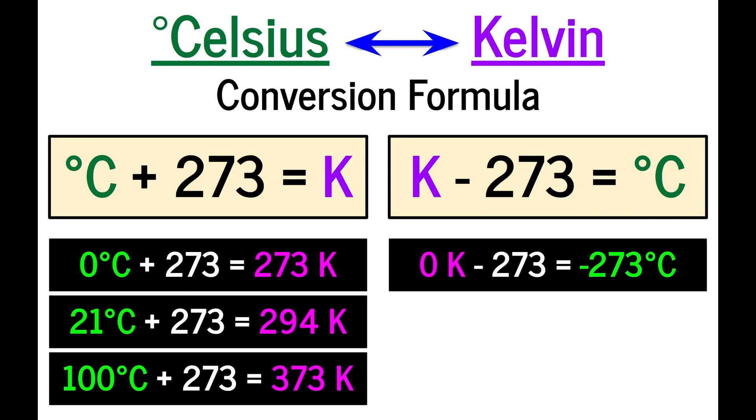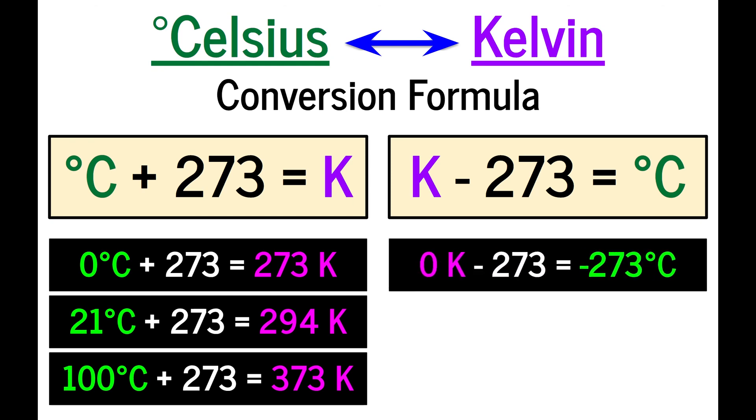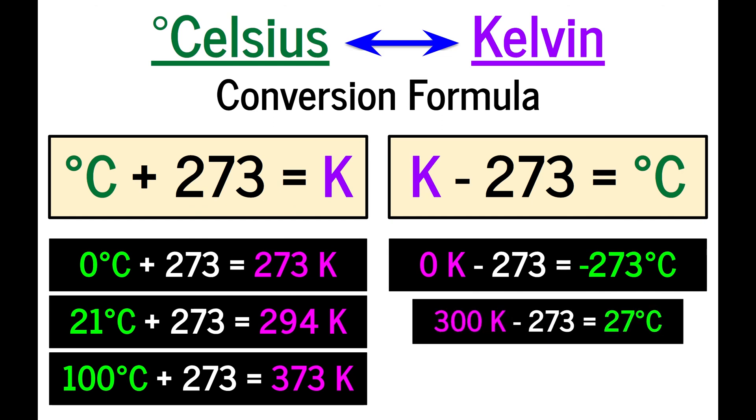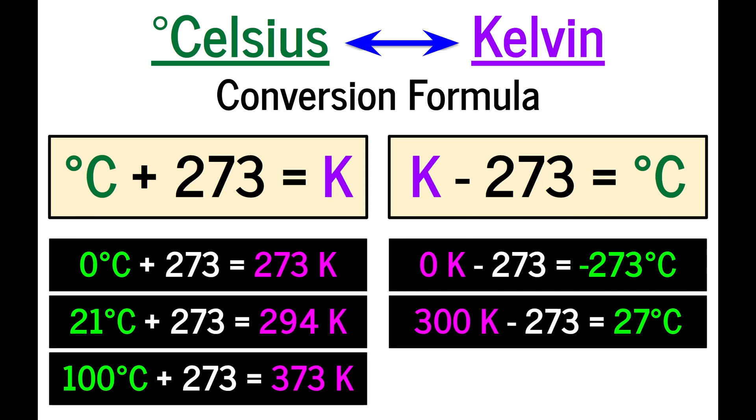Finally, going in the other direction. What is absolute zero in degrees Celsius? As long as you can memorize that absolute zero is zero Kelvin, then just subtract 273 from that, and you'll get negative 273 Celsius. Here's a random number, 300 Kelvin. What is that in Celsius? Once again, subtract 273, and you'll find that it is 27 degrees, which is like a hot summer day.